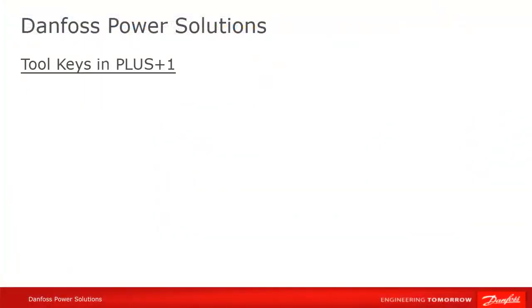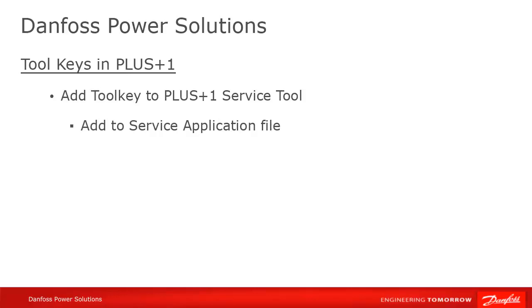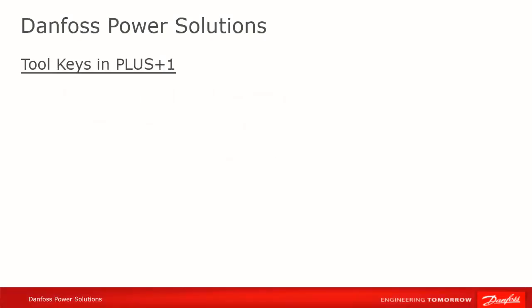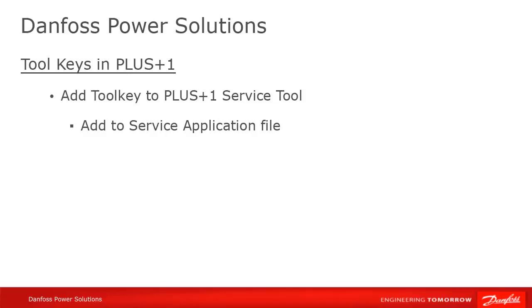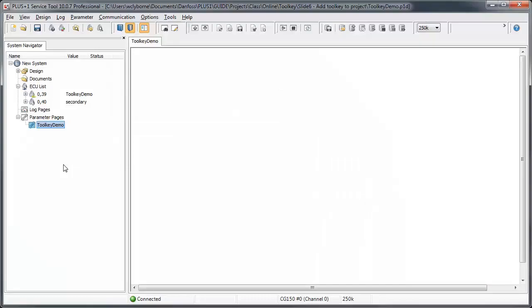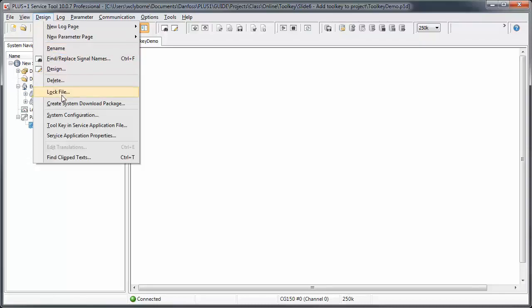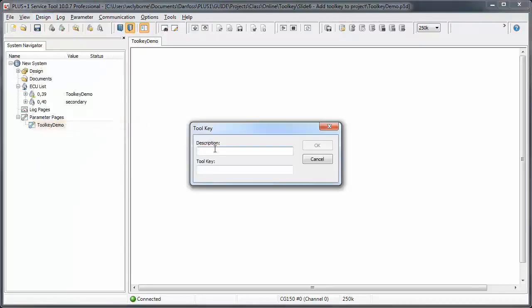On the service tool side, there are two ways to enter the toolkey: either integrated into a service tool application file, or added to the service tool program environment. The preferred and most secure way is to integrate the toolkey into the service tool application or P1D file. In design mode, click on the design drop-down menu, select Toolkey and Service Application File, and enter the toolkey, which will be visible neither while entering nor afterwards. You can only place one toolkey at a time into a P1D file.